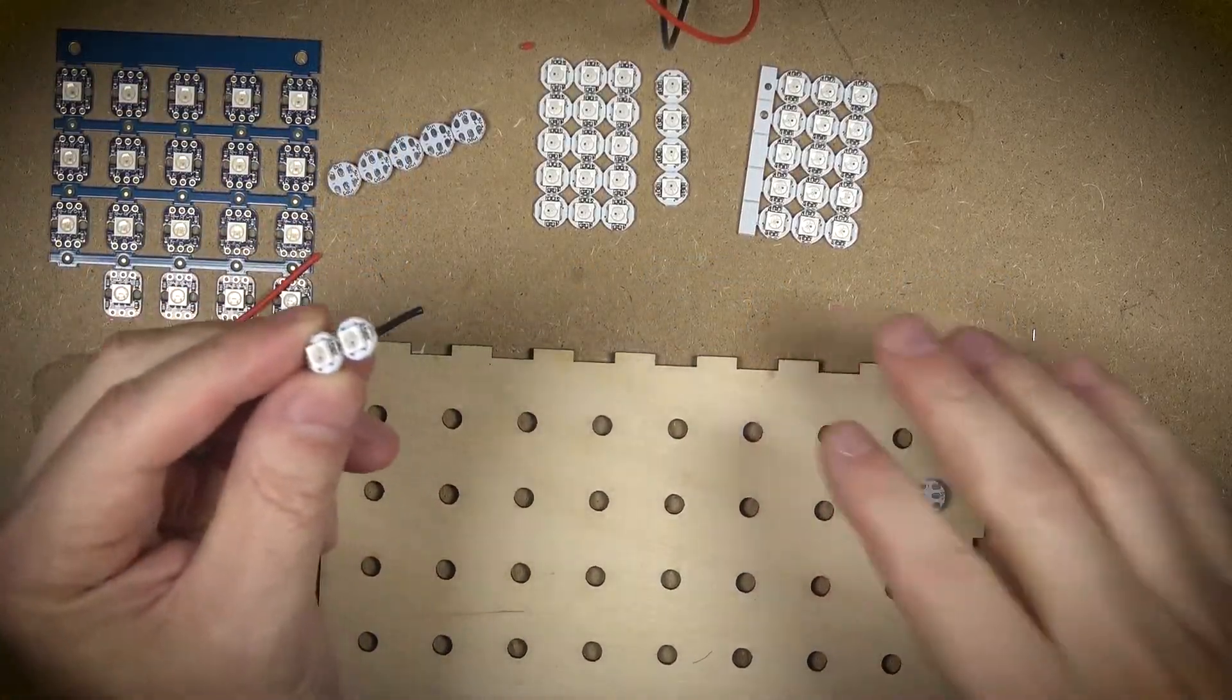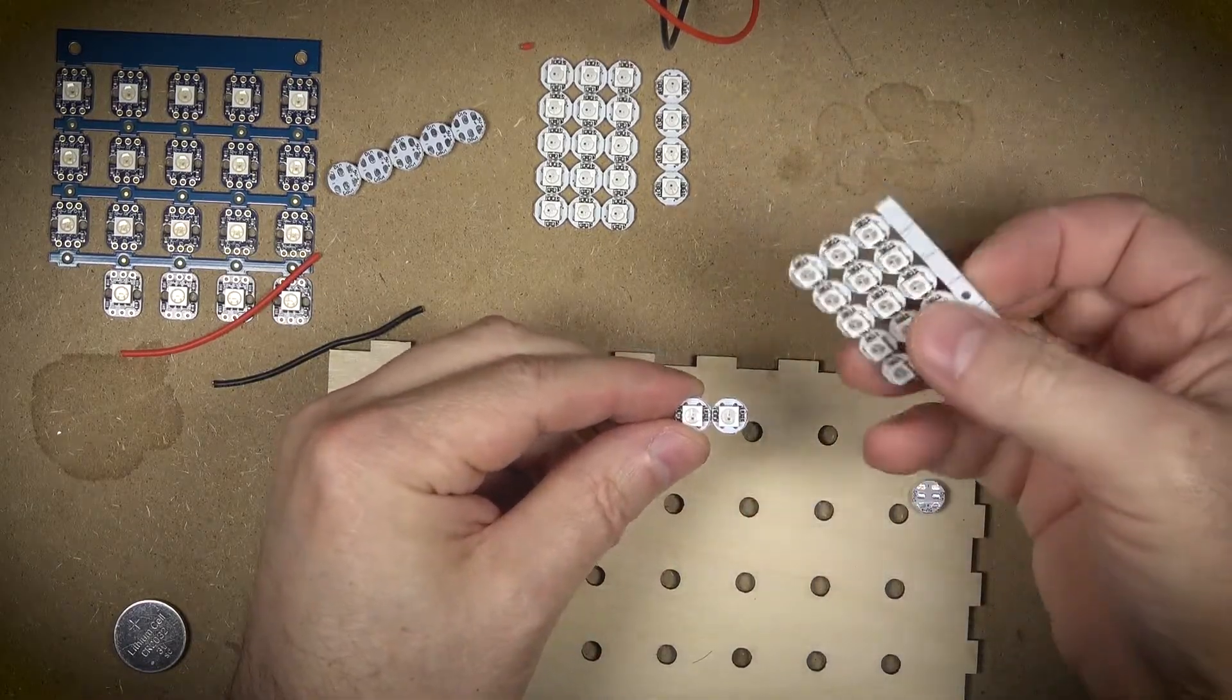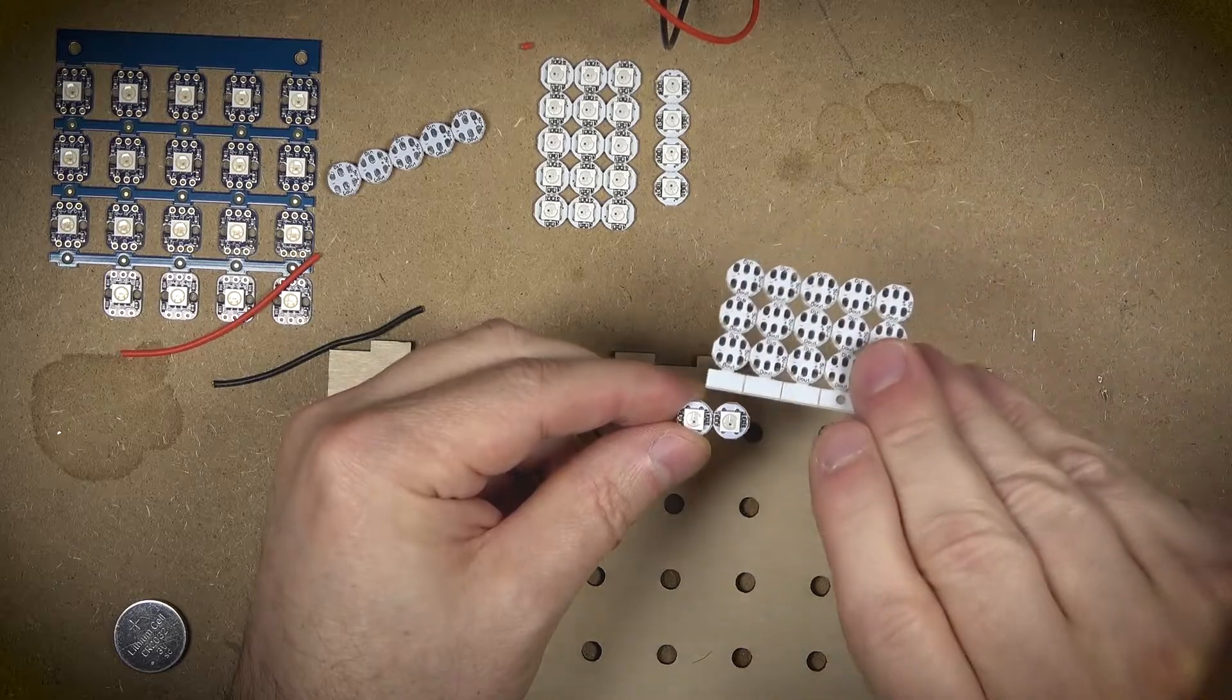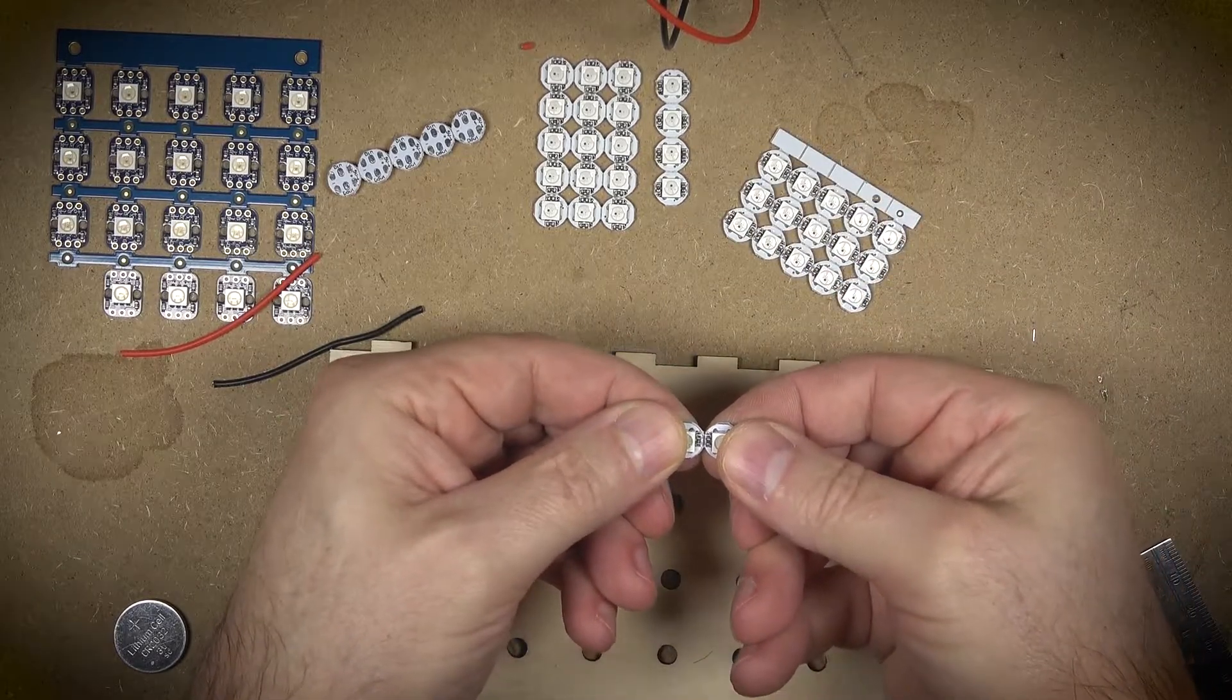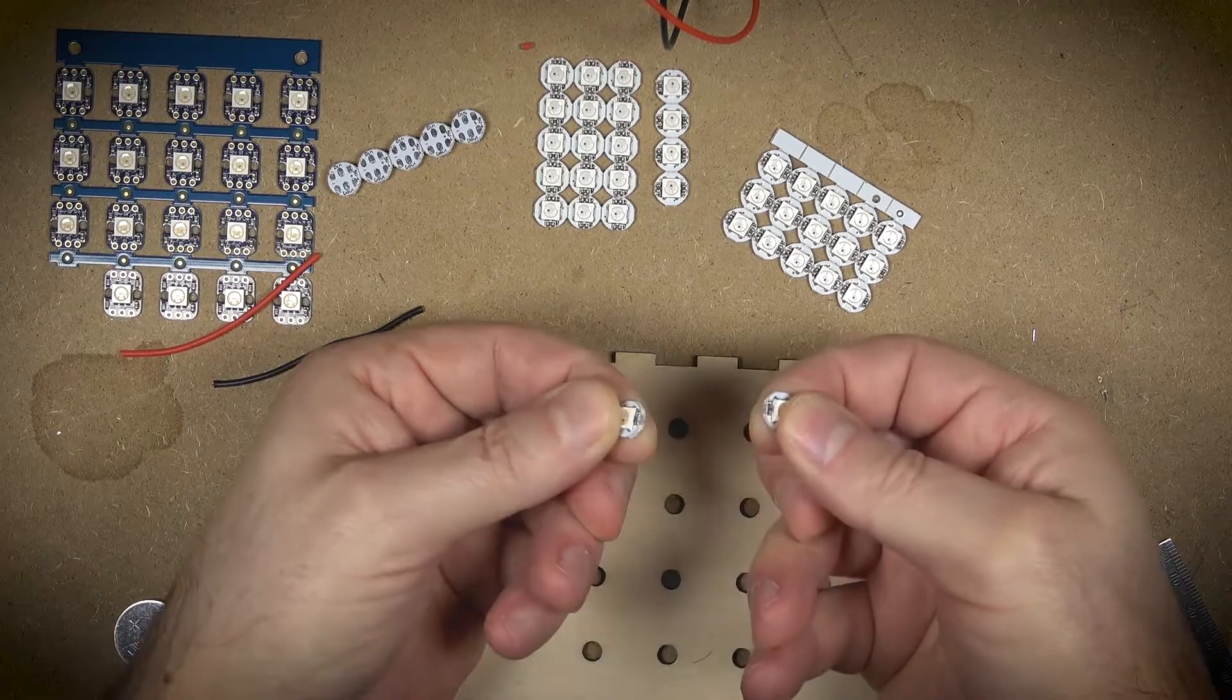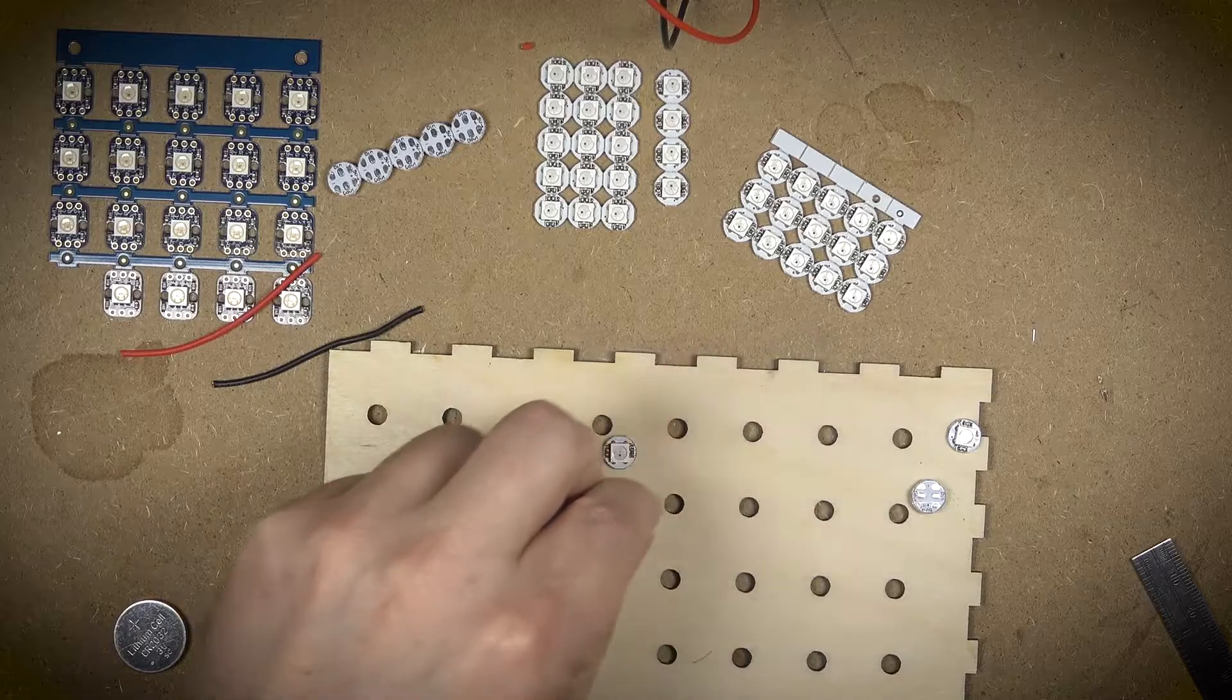First thing to note is they come in various quantities and they're all stuck together in these little bulk circuit boards. The first thing I do is break them apart very carefully to make sure that I don't damage the circuit board or the solder pads on the back side.